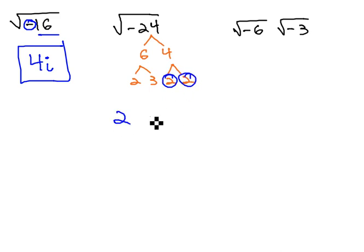You might see a pair of 2's. So a 2 is outside the radical. Inside the radical, we have 2 times 3, or 6.